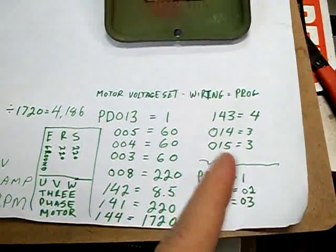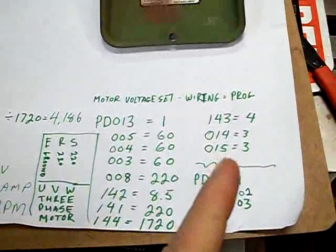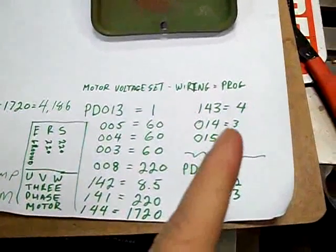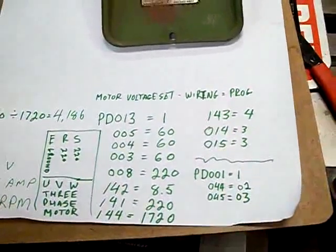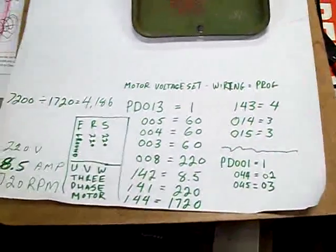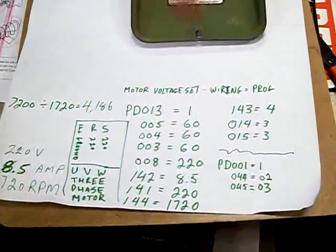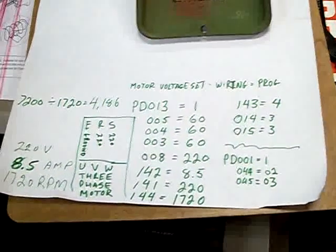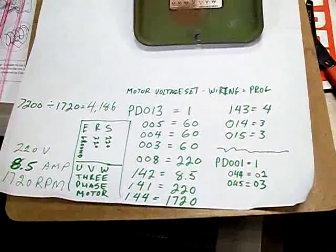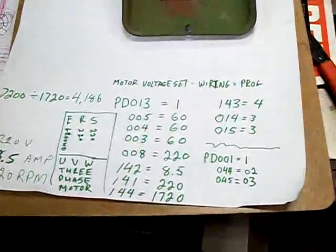14 and 15 is the accel and decel times. I set it up at 3 seconds, which is working fine. You can set up a faster deceleration. It seems to be stopping pretty quick under belt load and all that.